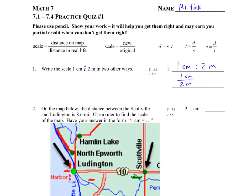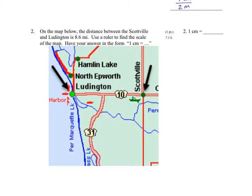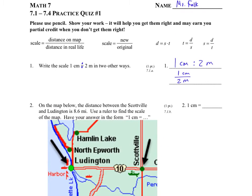Next: on the map below, the distance between Scottville and Ludington is 8.6 miles — use a ruler to find the scale on the map. The answer will be in the form of one centimeter equals something. For that we use the equation: scale equals the distance on the map divided by the distance in real life. All these questions are going to set up a proportion — one fraction equals another fraction.